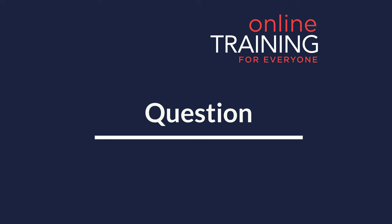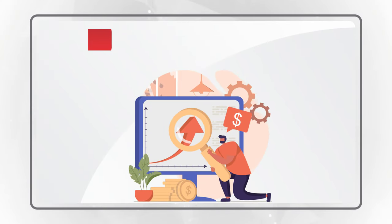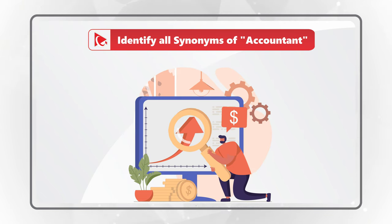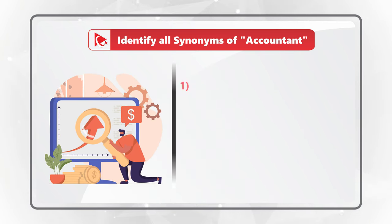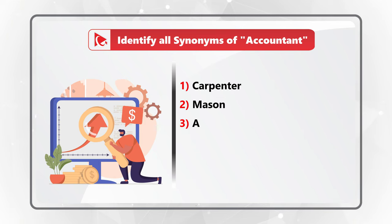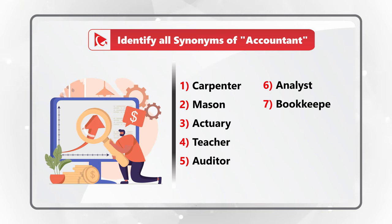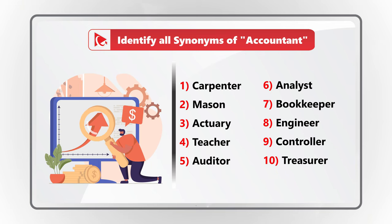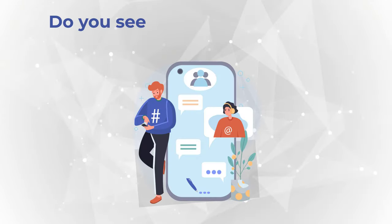I love this question because it seems simple but it allows you to show all your brain power. You're presented with 10 words and you need to identify all synonyms to the word accountant. The 10 words are: carpenter, mason, actuary, teacher, auditor, analyst, bookkeeper, engineer, controller, and treasurer. There could be between 1 and 10 answers. Give yourself a little bit of time, and when you're ready, please make sure to post your answer in comments.